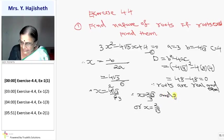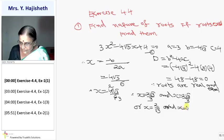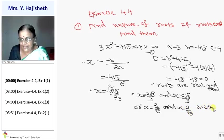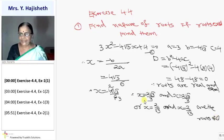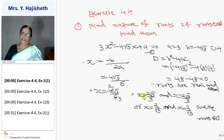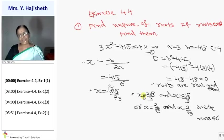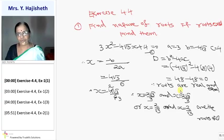Both roots are also 2√3/3, or 2/√3. These are the roots. Either we write it as 2√3/3 or as 2/√3 — both ways are correct.